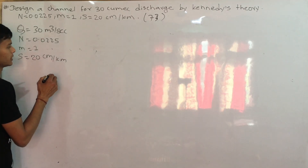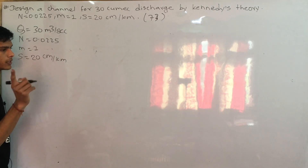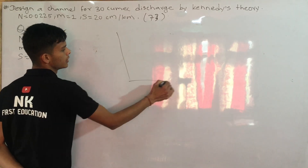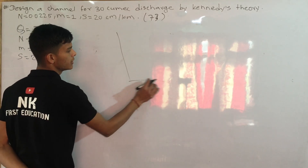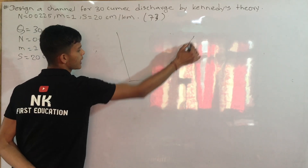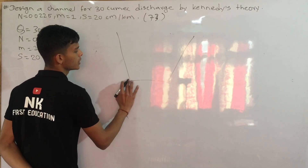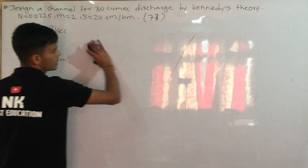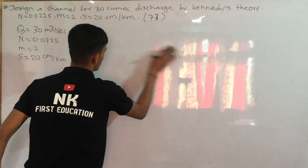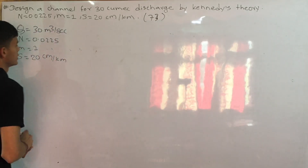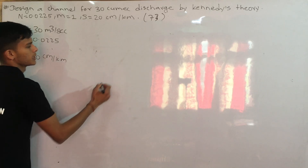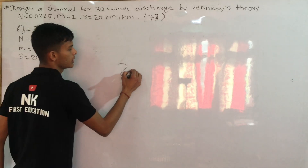It is a bed slope. This is a bed slope. It is 20 cm per km. What is it? It is 20 cm.